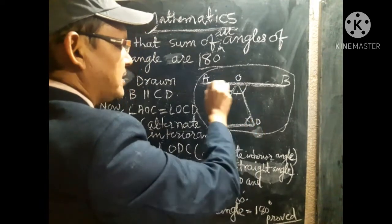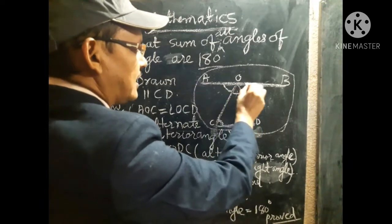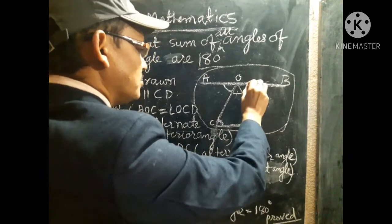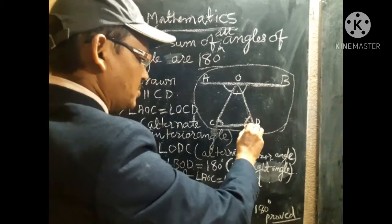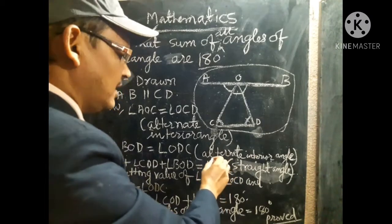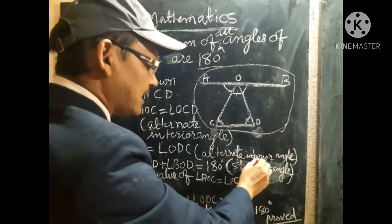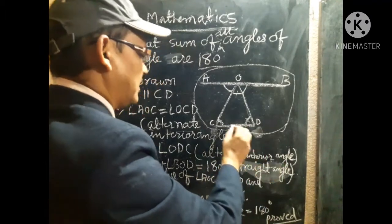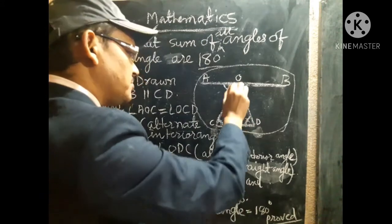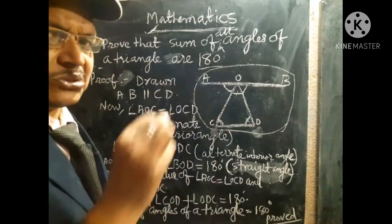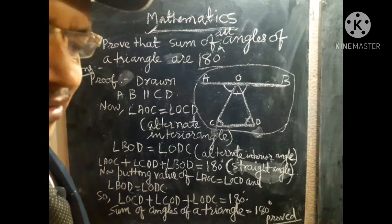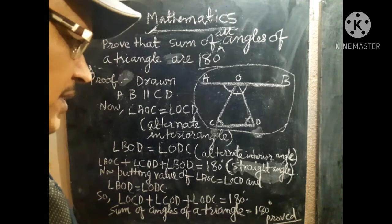The reason is alternate interior angles — these are lines between the two parallel lines, so these are interior angles.